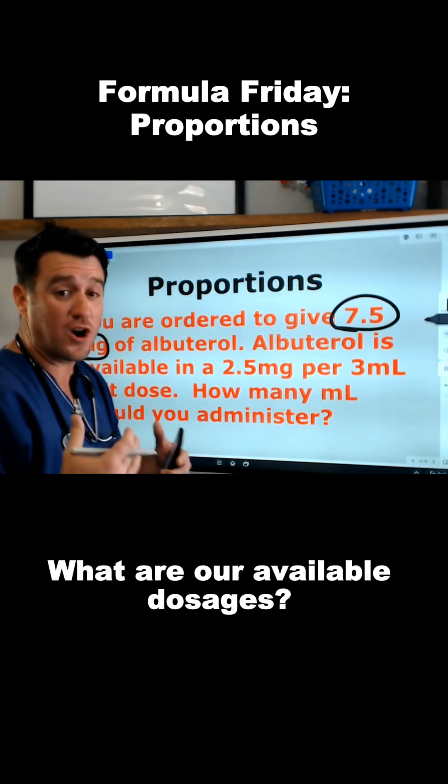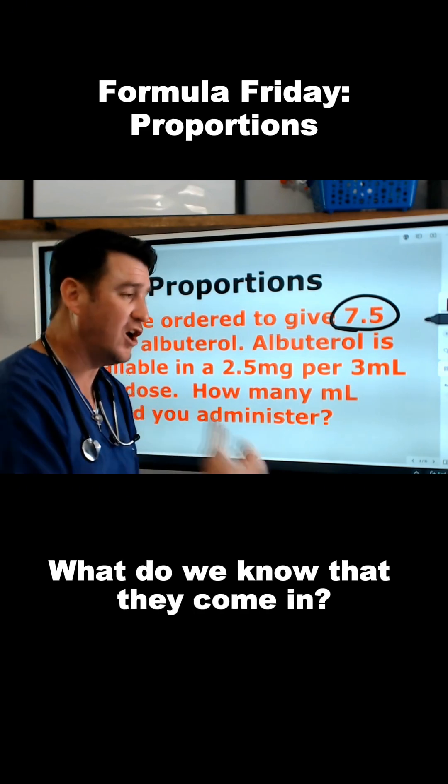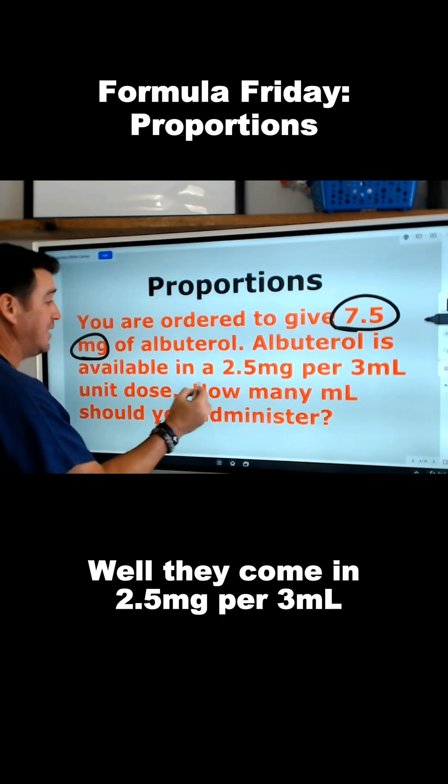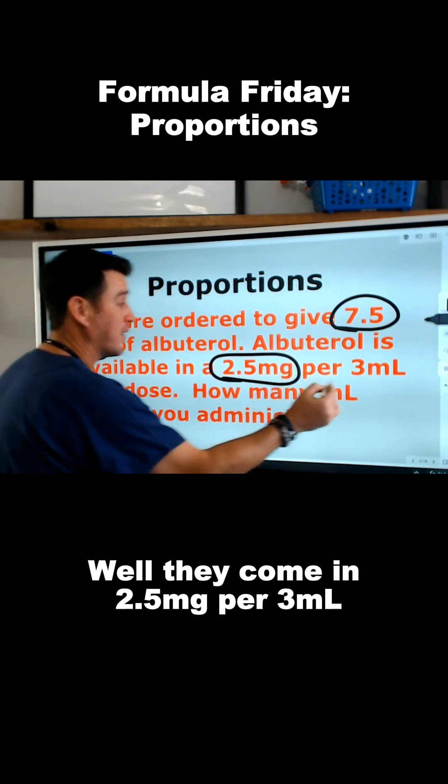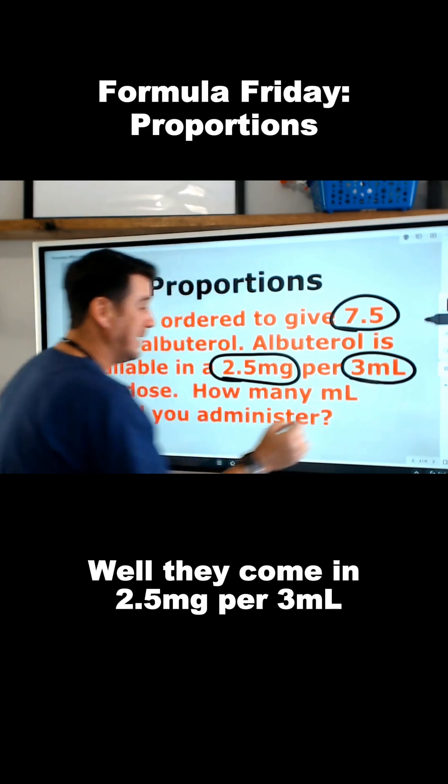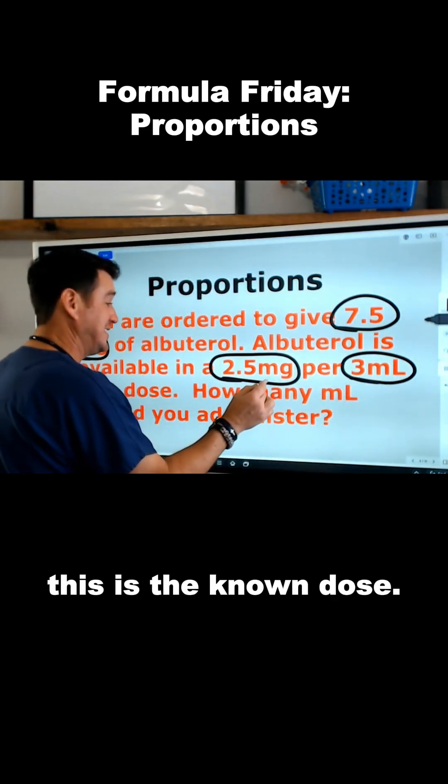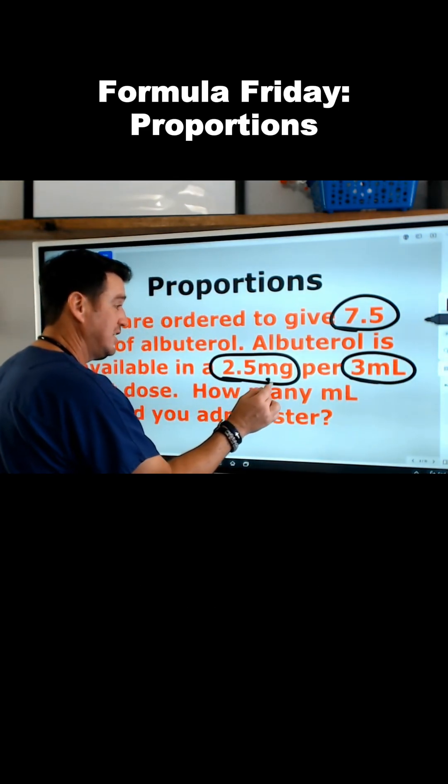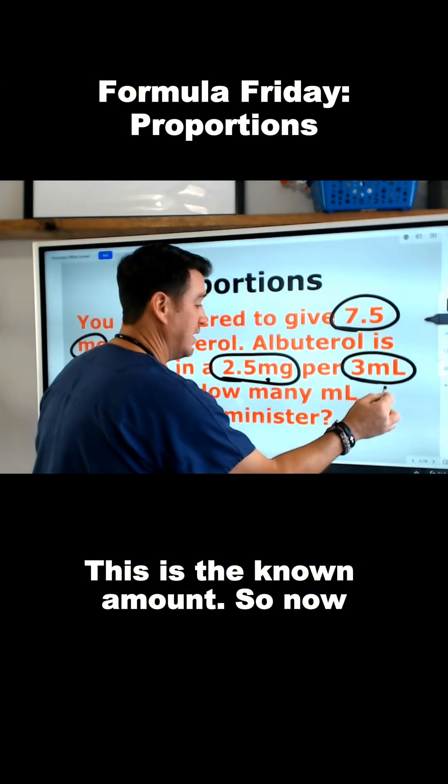What are our available dosages? What do we know that they come in? Well, they come in 2.5 milligrams per 3 milliliters. This is the known dose. This is the known amount.